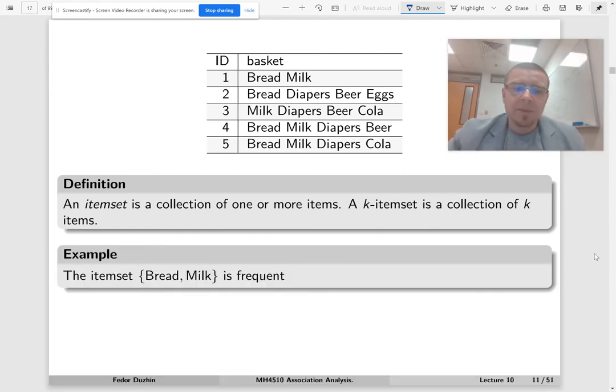This itemset, bread and milk, is frequent because if you look at bread and milk, do they appear together often? And actually, they do appear together often. Bread and milk, bread and milk, bread and milk. This itemset appears in three out of five transactions, which means it appears in 60% of all transactions. So it is quite frequent.